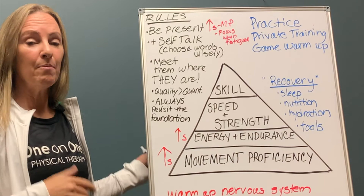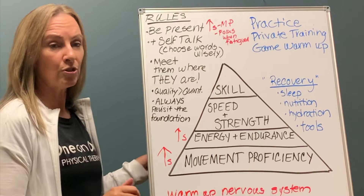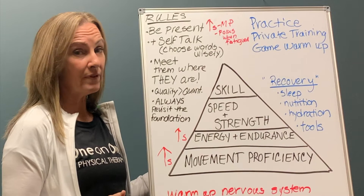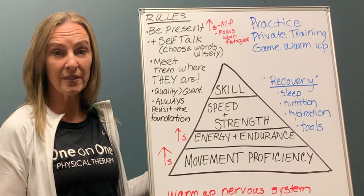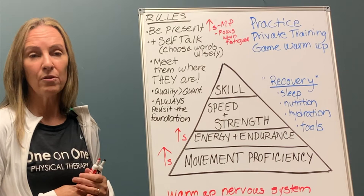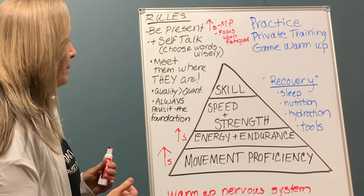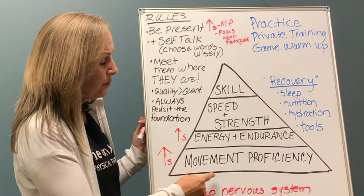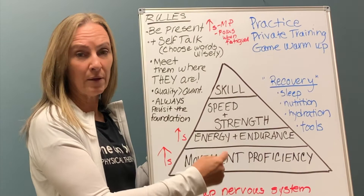A few rules of the pyramid: Rule number one — be present. Phones down, distractions away. Research shows movement proficiency increases when athletes are present, and being present enhances focus when fatigued — when injuries are more likely. Positive self-talk matters too: choose your words wisely, use fewer cues, and meet athletes where they are. Do not have an eight- or ten-year-old do a push-up unless it is a perfect military push-up — you'll only hard-wire poor movements.